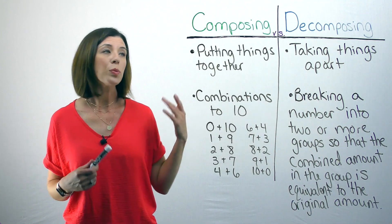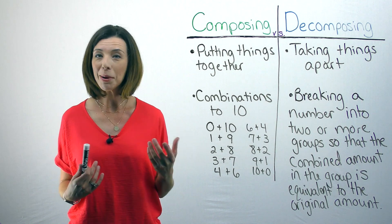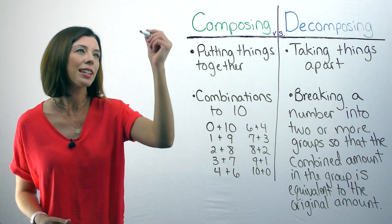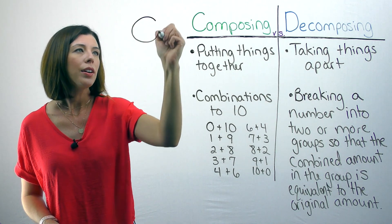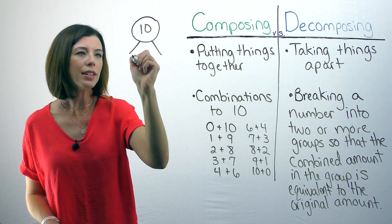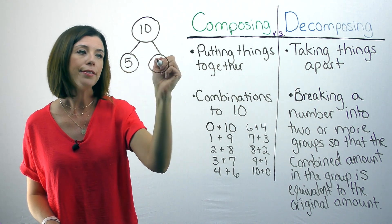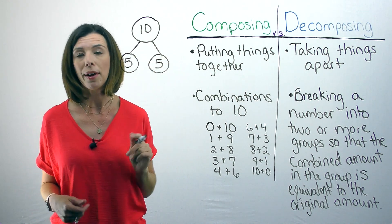Many times, when we think about composing and decomposing numbers, we use a strategy called number bonds, and it looks something like this. I could do a number bond for the number ten, and I show that I can break this into two groups, and it would be five and five. That's what a number bond looks like.